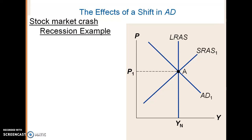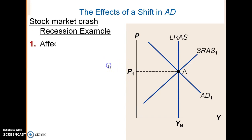As an example we had in the previous chapter: we had a stock market crashing. So you are at full levels of output, the stock market crashes, people become very pessimistic about the future, and there's less demand in the economy — aggregate demand shifts to the left.